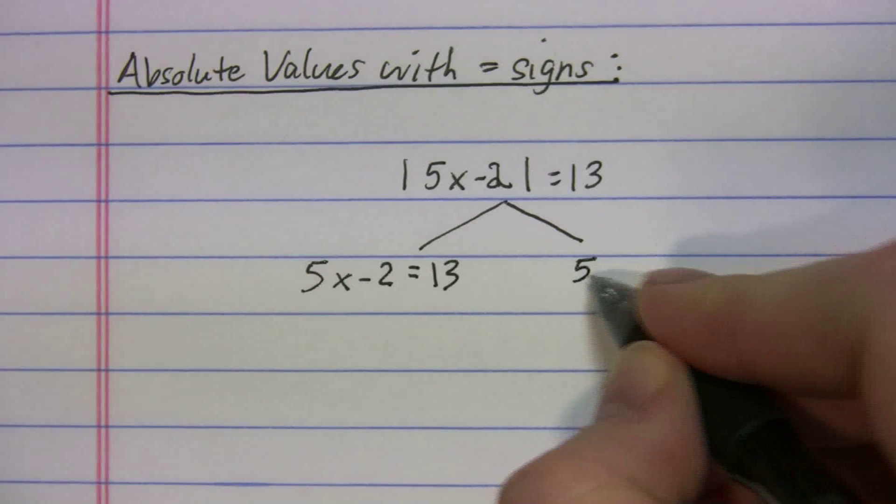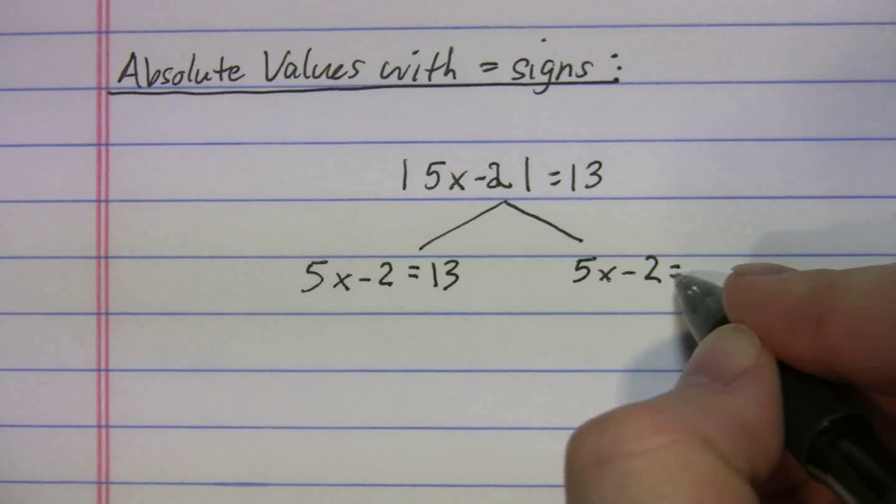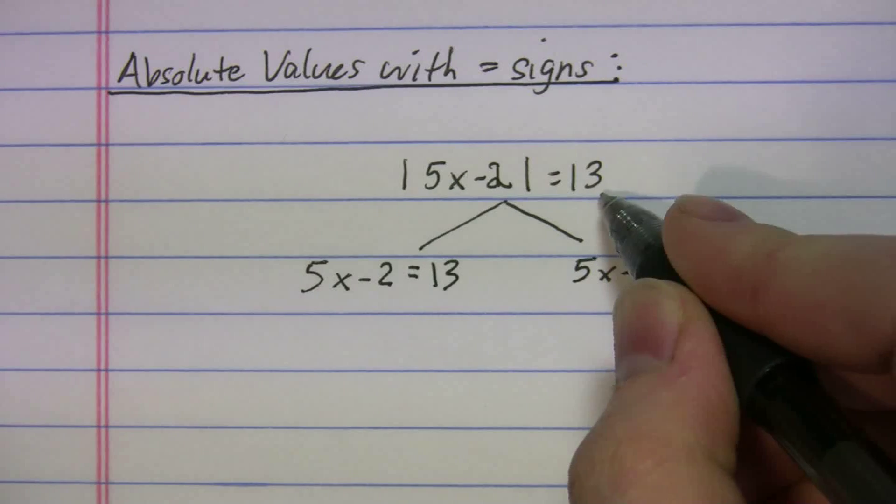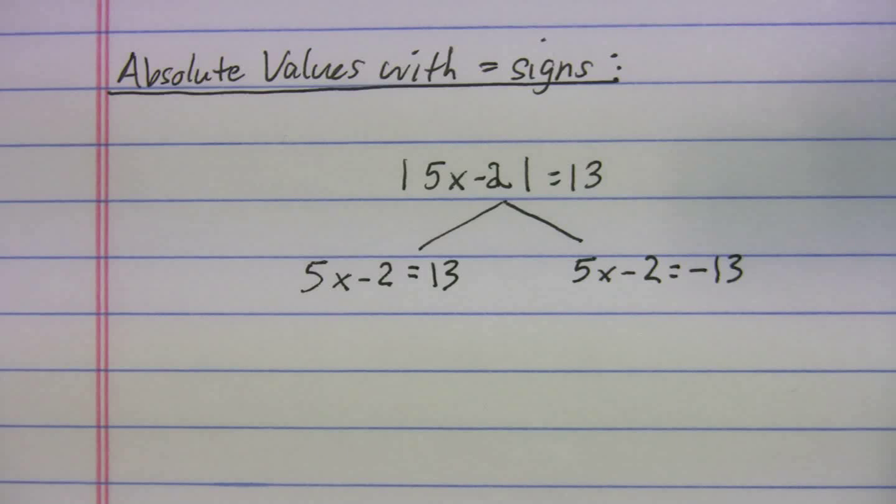The second one, when we rewrite it, we're going to set it equal to the negative number. That's going to be our negative version. And now you're just going to treat this like an equation and solve.